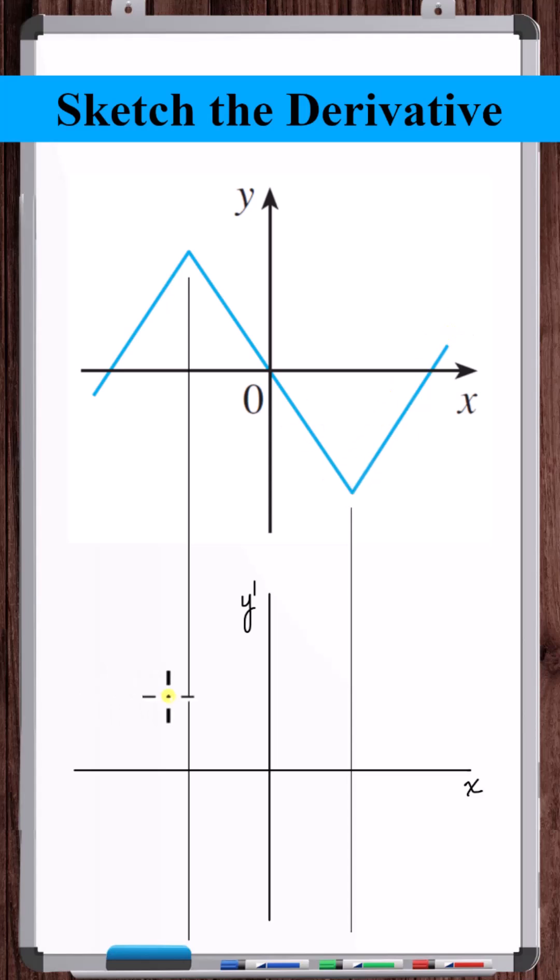So on the derivative graph around the kinks, y prime is going to be constant. We can see that here and here, the slopes are both positive and they have the same magnitude. So in these two regions, there'll be the same constant positive slope.